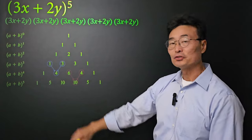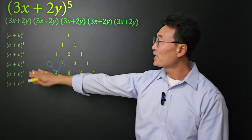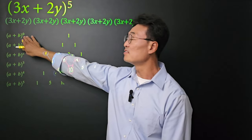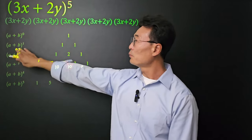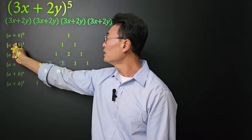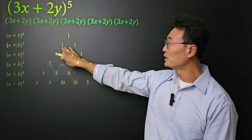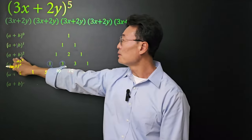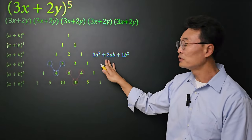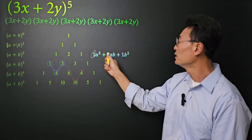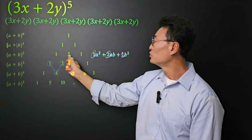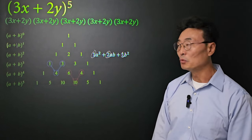Let me introduce you to Pascal's triangle. When you have (a + b) to the zero power, it's going to be 1, because anything to the zero power is always 1. When we have (a + b) to the first power, the coefficient of a is 1 and the coefficient of b is 1, so we have 1 and 1. When you do (a + b) squared, we get 1a squared plus 2ab plus 1b squared — so the 1, 2, and 1 are in Pascal's triangle.